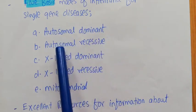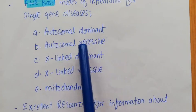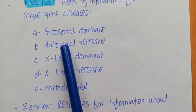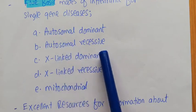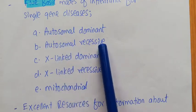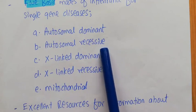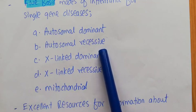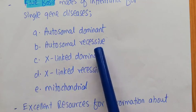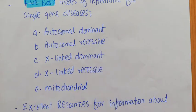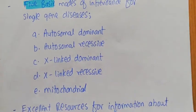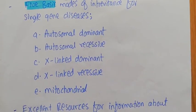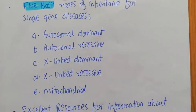Autosomal recessive means the gene is again present on chromosomes 1 through 22, but it is recessive in nature. This means that expression will only occur in the homozygous condition — you need two copies of the recessive allele for the expression of that particular disease.